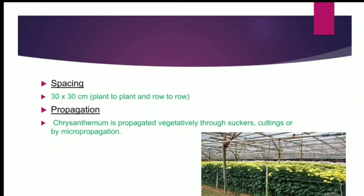Spacing: 30 x 30 cm plant to plant and row to row. Propagation: Chrysanthemum is propagated vegetatively through suckers, cuttings, or by micropropagation.